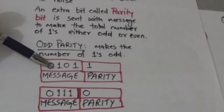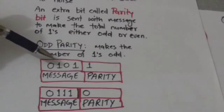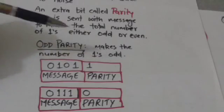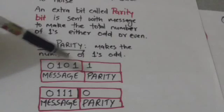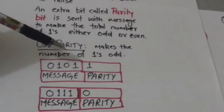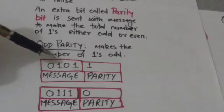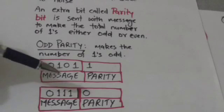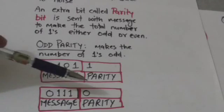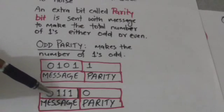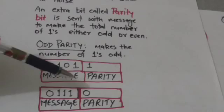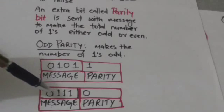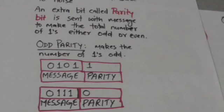Suppose the original message is 0 1 0 1. Here the number of ones is even, so the parity bit would be 1. When this parity bit is sent with the message, there would be an odd number of ones. If the original message is 0 1 1 1 1, which already has an odd number of ones, the parity bit will be 0, so the message will still have an odd number of ones.